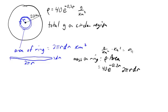To get the total mass on this entire circular region, we're just going to add up the mass on each of those rings. So we're just going to integrate from the center of the ring out to the edge of the ring, from 0 to 20, 40e^(-0.2r) times 2πr dr.